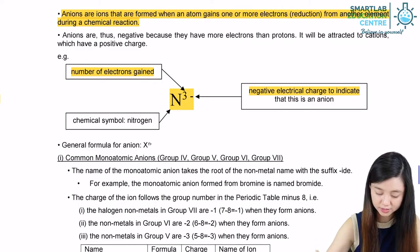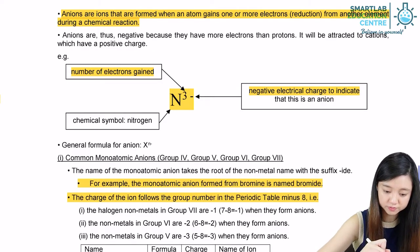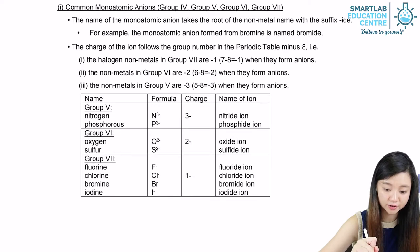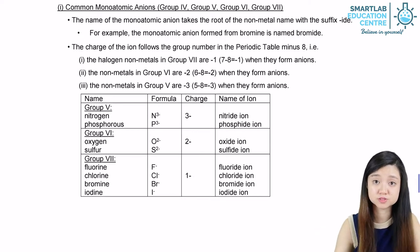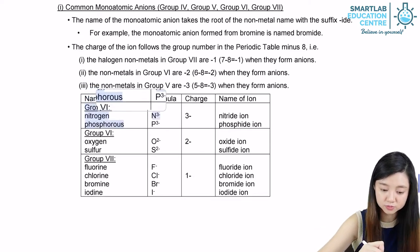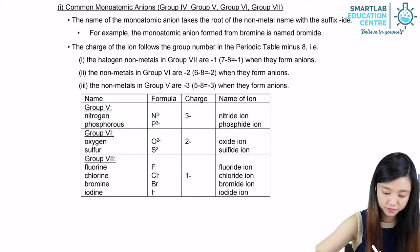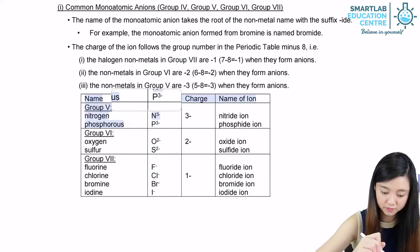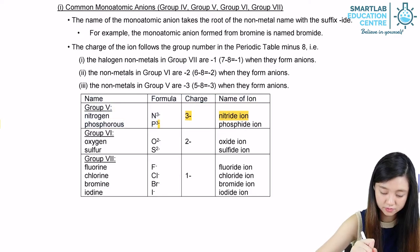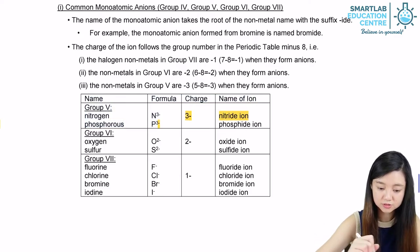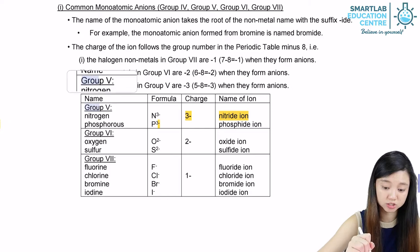Let us look at some examples. For group 5, all the elements already have 5 outermost electrons, so they will tend to gain 3 electrons, giving them a 3- charge.